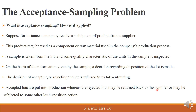Rejected lots may be returned back to the supplier — we tell the supplier the lot is not satisfactory — or they may be subjected to some other lot disposition action. That other action could be replacing all defective units in the entire lot with good, non-defective units.